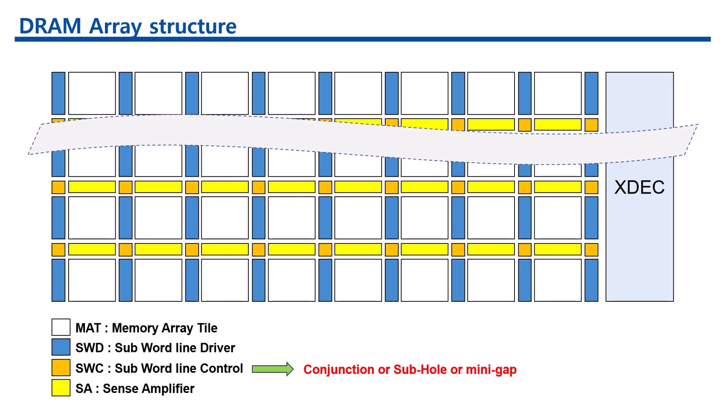DRAM array structures are like the following. Components and their functions: MATE, memory array tile, is the fundamental unit of storage in the DRAM array. It consists of multiple memory cells organized in rows and columns.